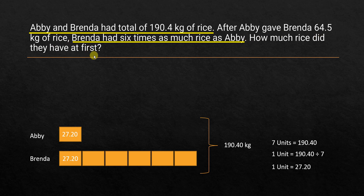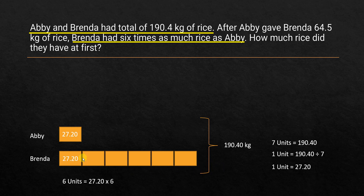We are currently at the end of this transaction, so we have to go one step back. That would be before Abhi gave Brenda 64.5 kg of rice — this is the situation after the transfer. Now, Brenda has to return back 64.5 kg of rice to Abhi. Before we do that, let's find out the total amount of rice Brenda has. She has six units, so six times 27.20 is 163.20 kilograms.